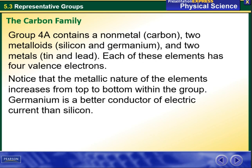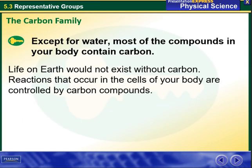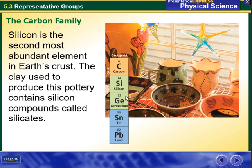Group 4A is the carbon family, containing the non-metal carbon, two metalloids — silicon and germanium — and two metals, tin and lead. Each of these elements has four valence electrons. Silicon is the second most abundant element in Earth's crust. The clay used to produce pottery contains silicon compounds called silicates.